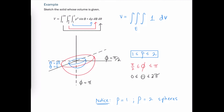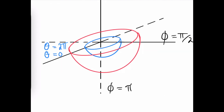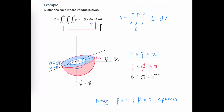Returning to our rho criteria: rho goes from 1 to 2, which means we get all the rho values between these two outer hemispheres. This gives us a thick outer shell with negative space on the inside of our bowl. This outer shell corresponds to the rho equal to 2 sphere, and so this is the solid whose volume is determined by this triple integral.